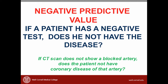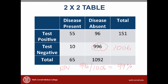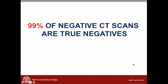The negative predictive value means that if a patient has a negative test, does he not have the disease? If the CT scan does not show a blocked artery, does the patient not have disease of that artery? Looking at our table, 1,006 arteries were negative for blockage using the CT scan, and 996 of those arteries were truly negative according to the angiogram. So the negative predictive value is 996 over 1,006, or 99 percent. In everyday language, 99 percent of negative CT scans are true negatives — that's a very good value, and makes you believe that if you have a negative CT scan, the patient does not have the disease.